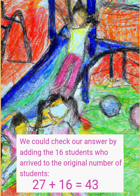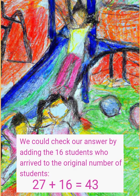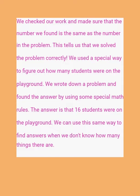We could check our answer by adding the 16 students who arrived to the original number of students: 27 plus 16 equals 43. We checked our work and made sure that the number we found is the same as the number in the problem. This tells us that we solved the problem correctly.